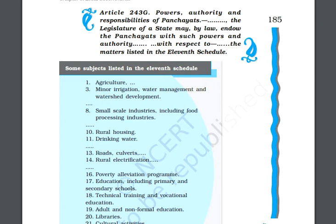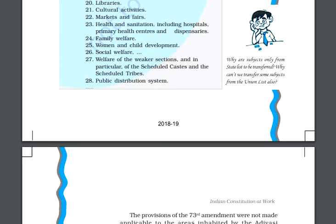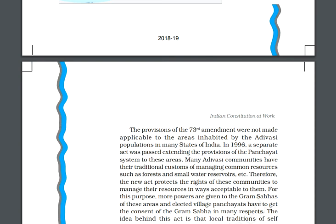The matters listed in the 11th schedule of the Indian constitution — their full responsibility will be of local governments — but the legislature of the state will pass on those powers to the panchayats so they are responsible for making laws and carrying out these functions. The 11th schedule includes subjects like agriculture, minor irrigation, small-scale industry, rural housing, drinking water, roads, and rural electrification.